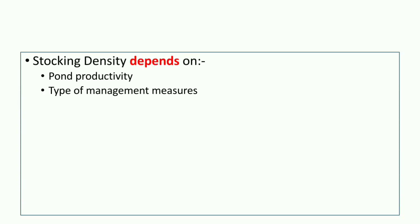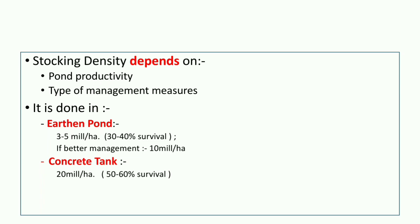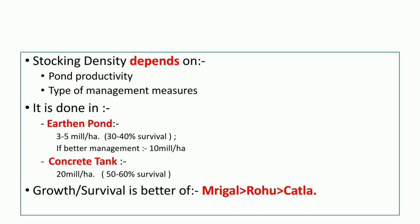Stocking density depends on pond productivity and type of management. In earthen ponds, 3 to 5 million seeds per hectare are stocked with 30 to 40% survival. With better management, 10 million per hectare can be stocked. In concrete tanks, 20 million per hectare can be stocked with 50 to 60% survival rate. Growth and survival is better for Mrigal than Rohu, and then Catla.